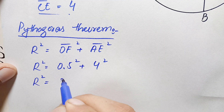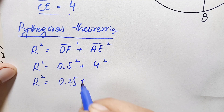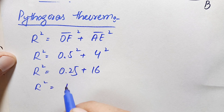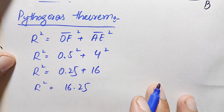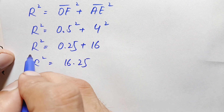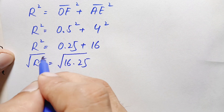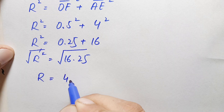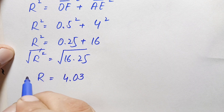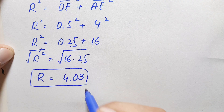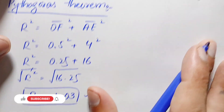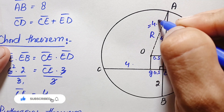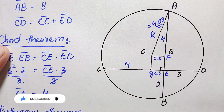Substituting the values: r squared equals 0.5 squared plus 4 squared, which gives r squared equals 0.25 plus 16, so r squared equals 16.25. Taking the square root on both sides, the final value of r is approximately 4.03 units. Therefore, the radius of this circle r is 4.03 units. That is our final answer.